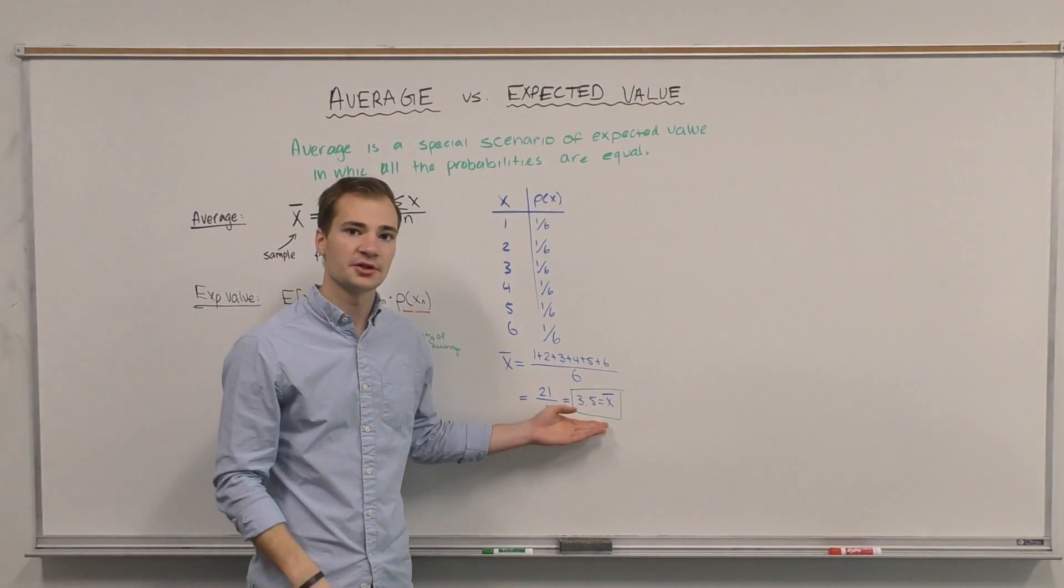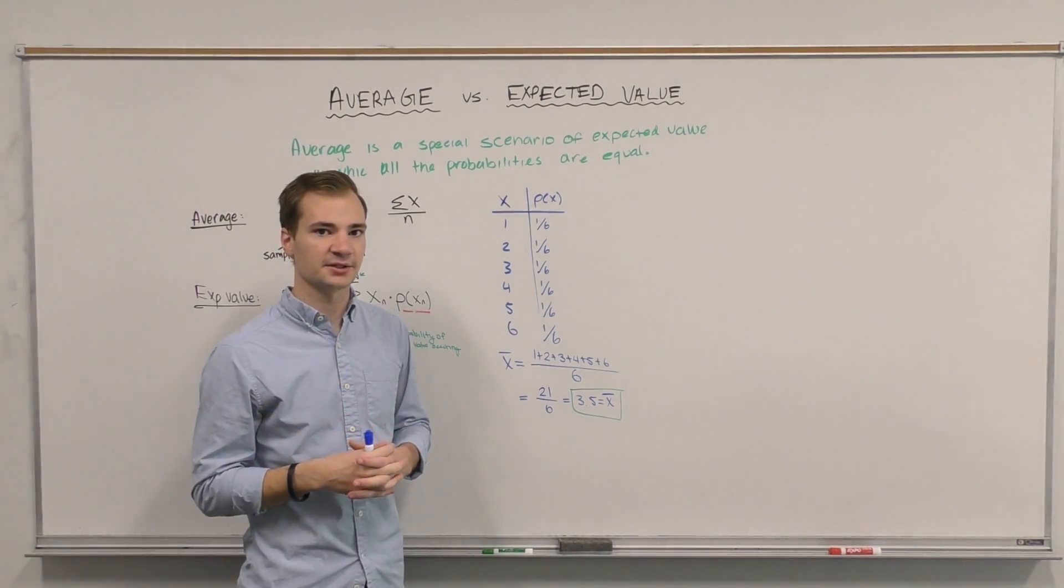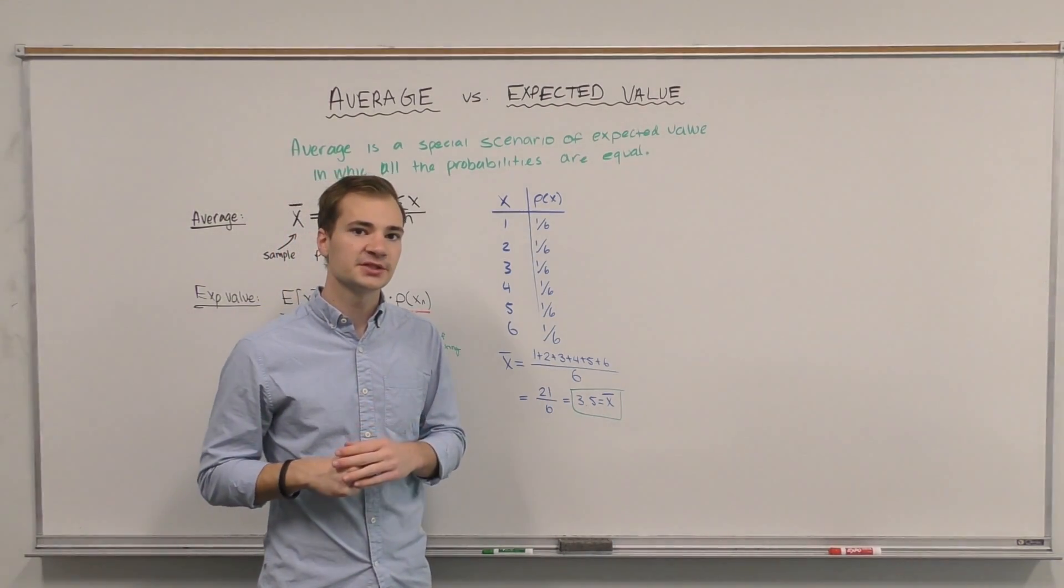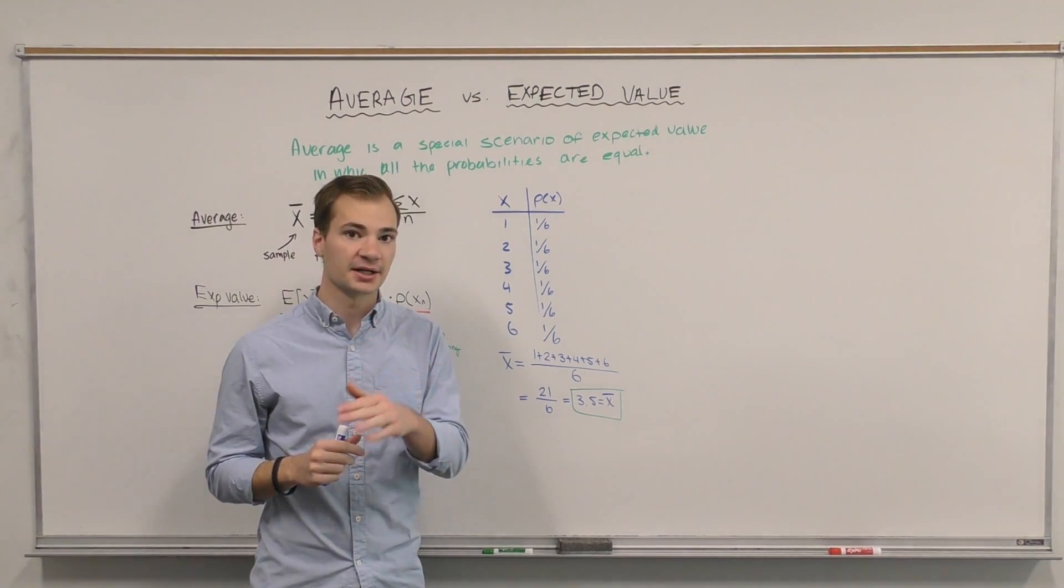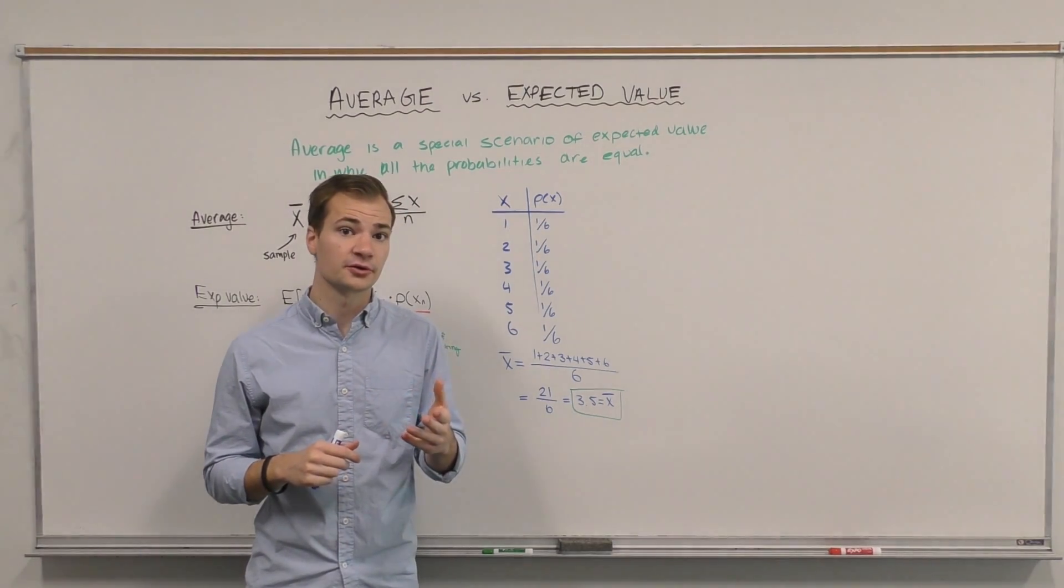So the average value if I rolled a thousand dice would be a 3.5, and this is pretty easy to see on something like Excel. Now what if we transform this so that it was not an equal die? In other words, a 5 and a 6 were more likely to land than a 1, 2, 3, or 4.